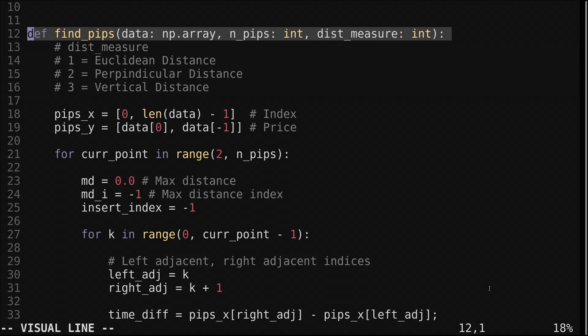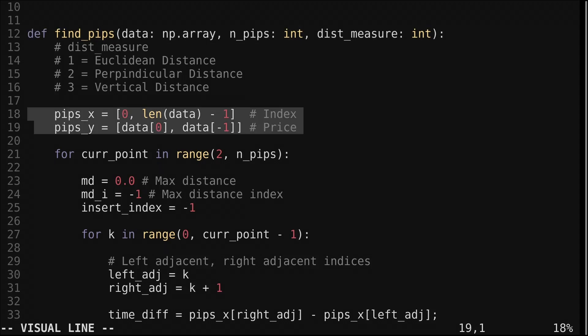The visualization showed the vertical distance, but euclidean and perpendicular distance are other options. In my experience all three of the distance measures often choose the same points, but it's worth testing if one measure has outstanding performance for a particular application.